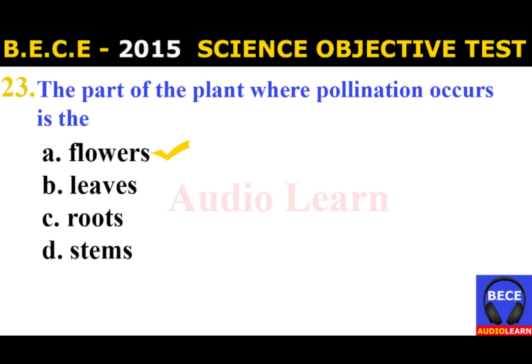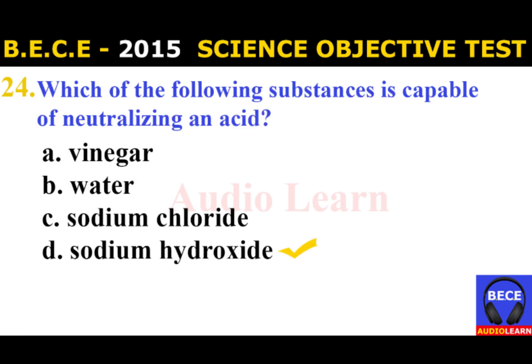Number 23: The part of the plant where pollination occurs is the A. Flowers, B. Leaves, C. Roots, D. Stems. The answer is A. Flowers. The part of the plant where pollination occurs is the flowers.